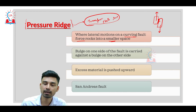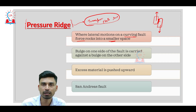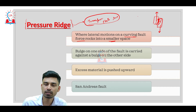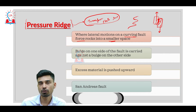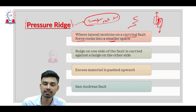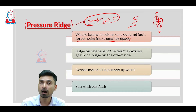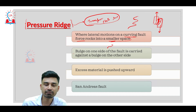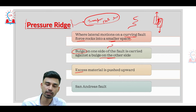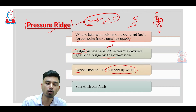When lateral motions take place around a curving fault in a transform plate interaction, the boundary is not a straight line but curves here and there. When this curving fault is displaced and pushes against another curving fault, the rocks present in this area are squeezed into a smaller space. The result of this squeezing is the development of a bulge on one side of the fault carried against a bulge on the other side. The excess material between the bulges is pushed in the upward direction — this is what we call a pressure ridge.